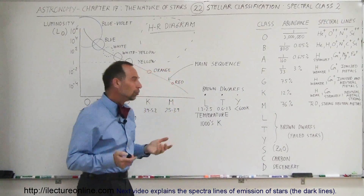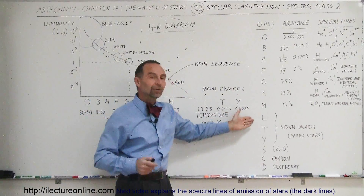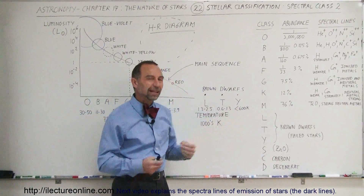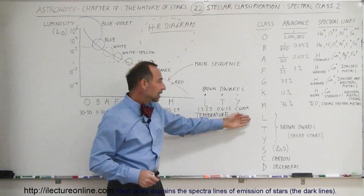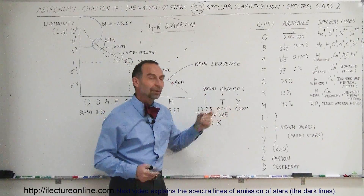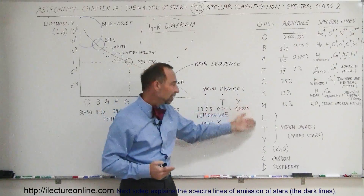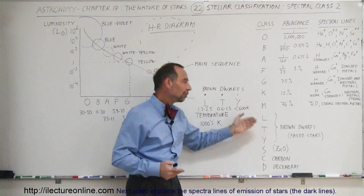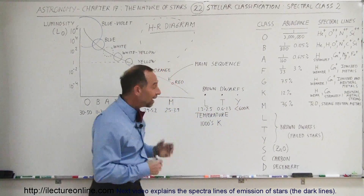Returning to the brown dwarfs — the failed stars that never started nuclear fusion — their surface temperatures can be determined using Wien's law. Based on that, we can identify what type of brown dwarf we're looking at.